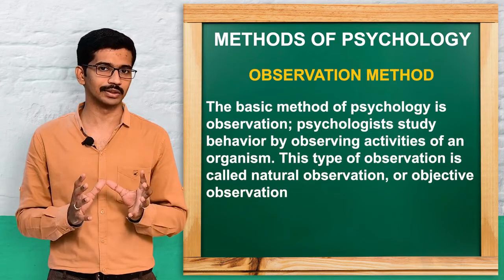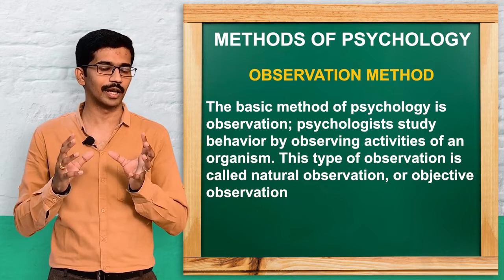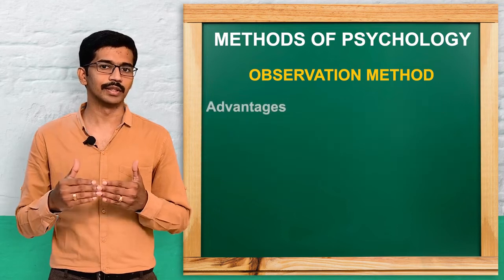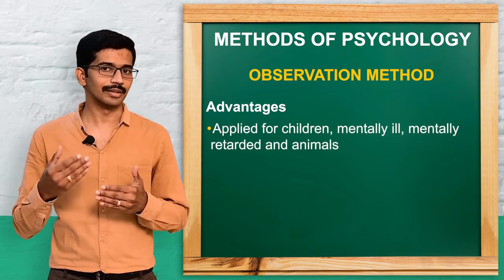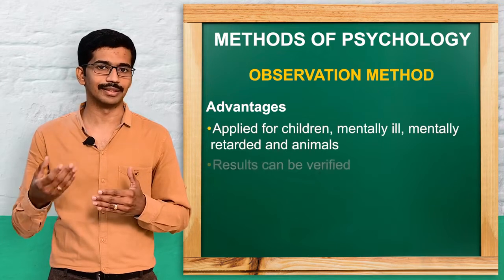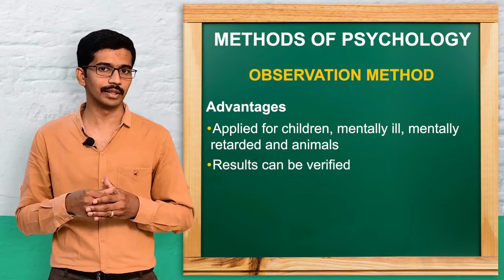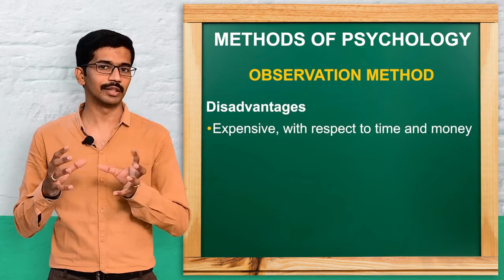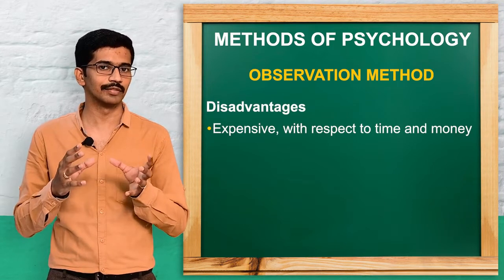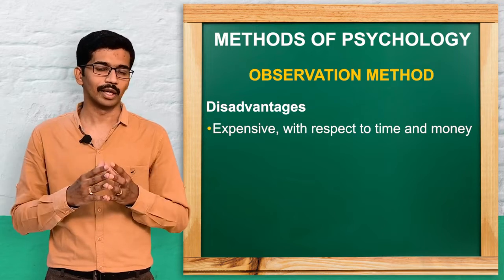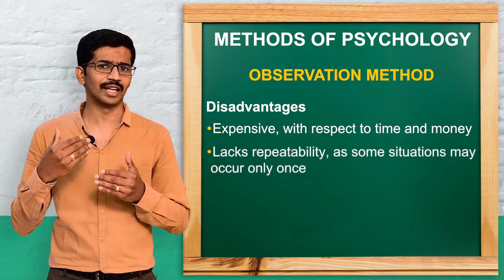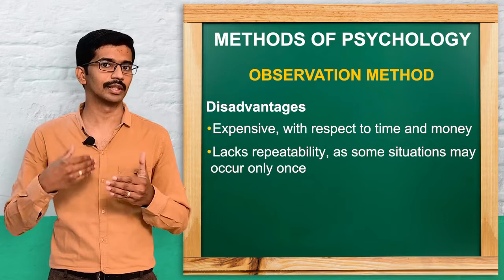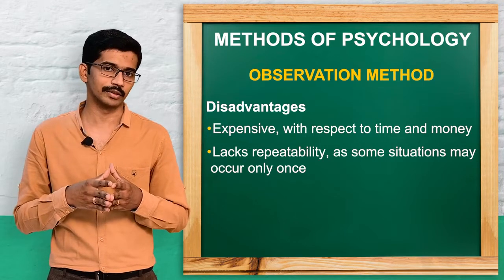The second method is the observation method. It is one of the basic methods of psychology, where the psychologist observes the activities of another individual. The advantage is that we can apply it to children, mentally retarded people, and those with mental disturbances or psychiatric problems. The demerits are that it is somewhat more expensive than introspection in terms of time and materials, and observation occurs in a natural setting only one time, so lack of repeatability is also a problem.